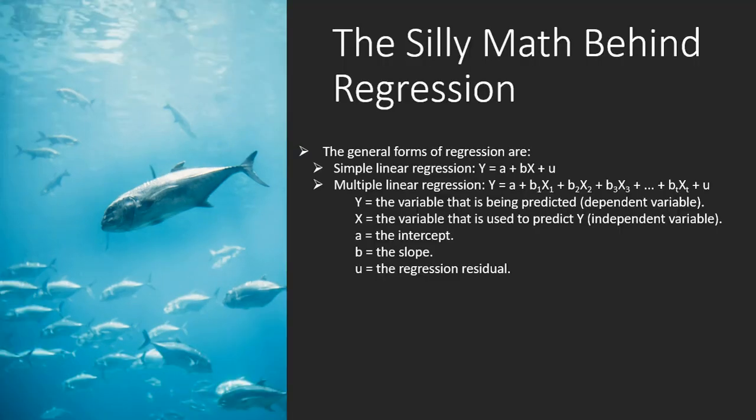So there is some math behind the regression formula. Simple linear regression is y equals a plus bx plus u. Where y is the variable that we're trying to predict, that's the dependent variable, x is the variable that is used to predict y, and we call that the independent variable. A is the intercept, b is the slope, and u is the regression residual.